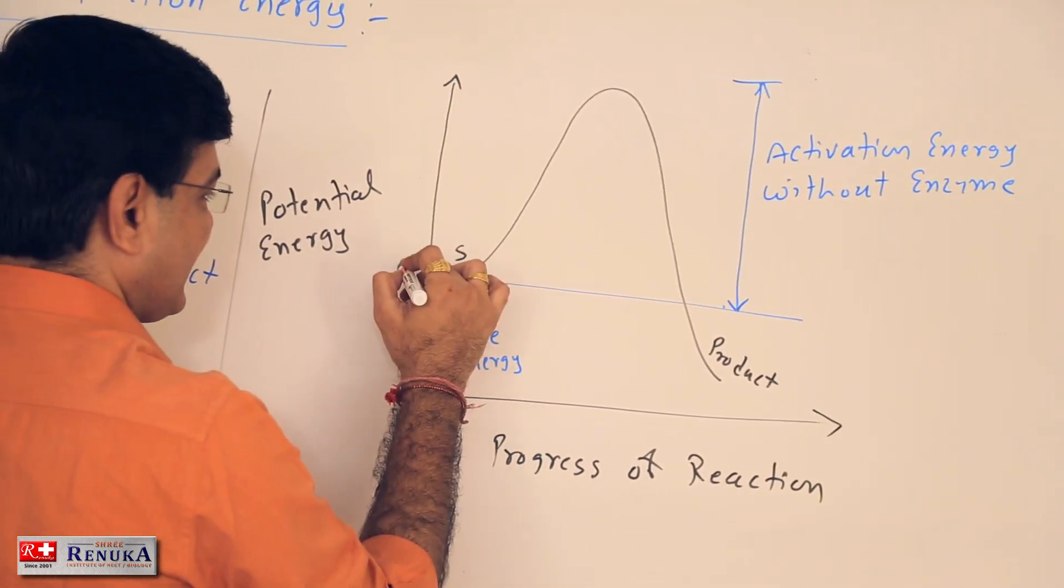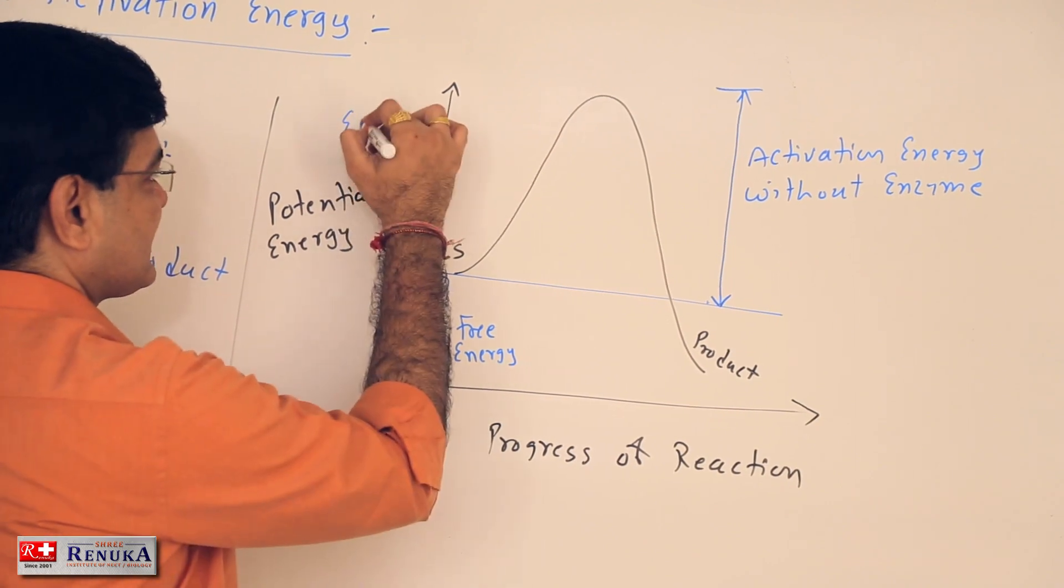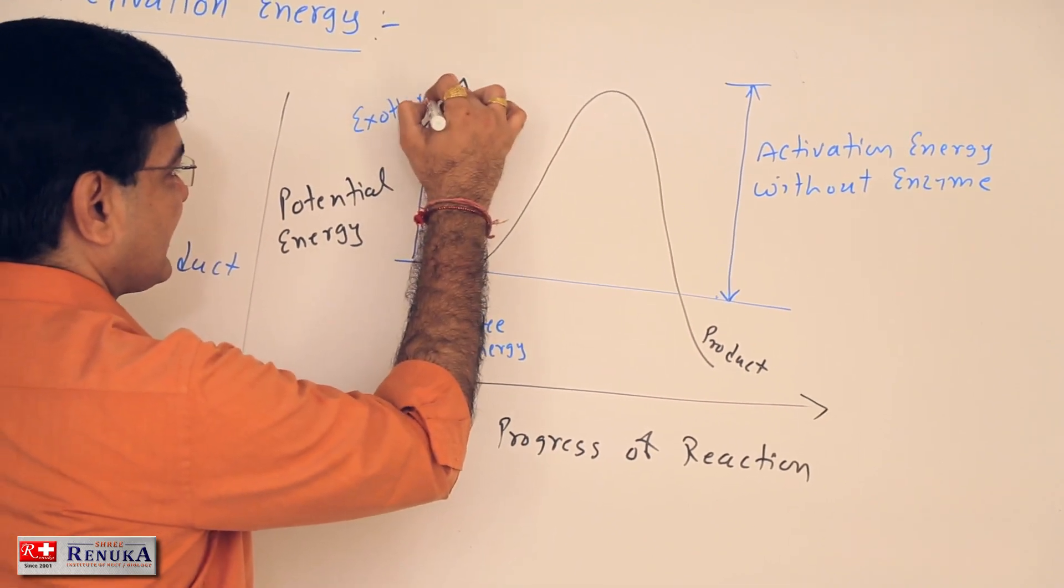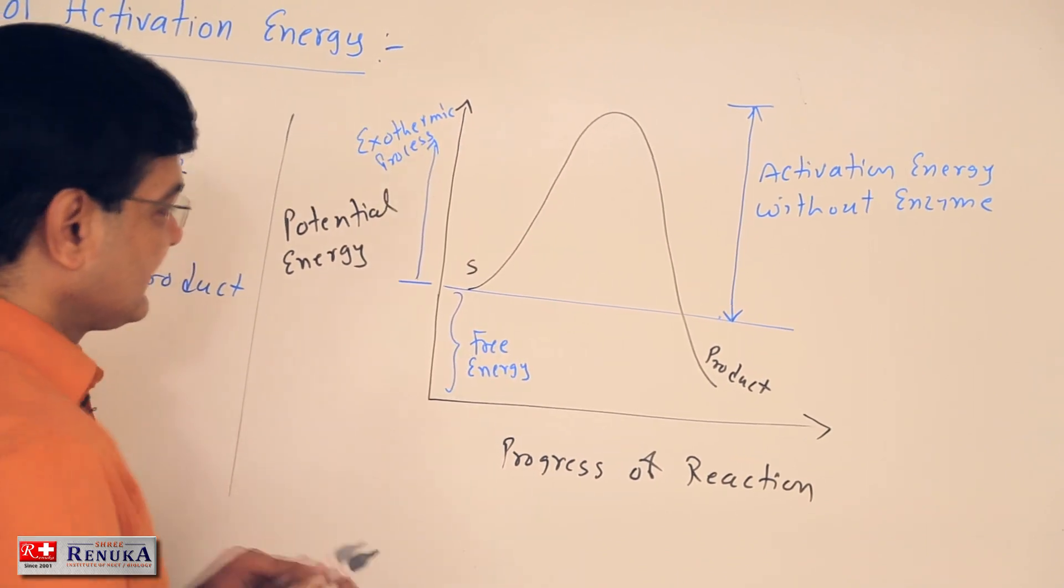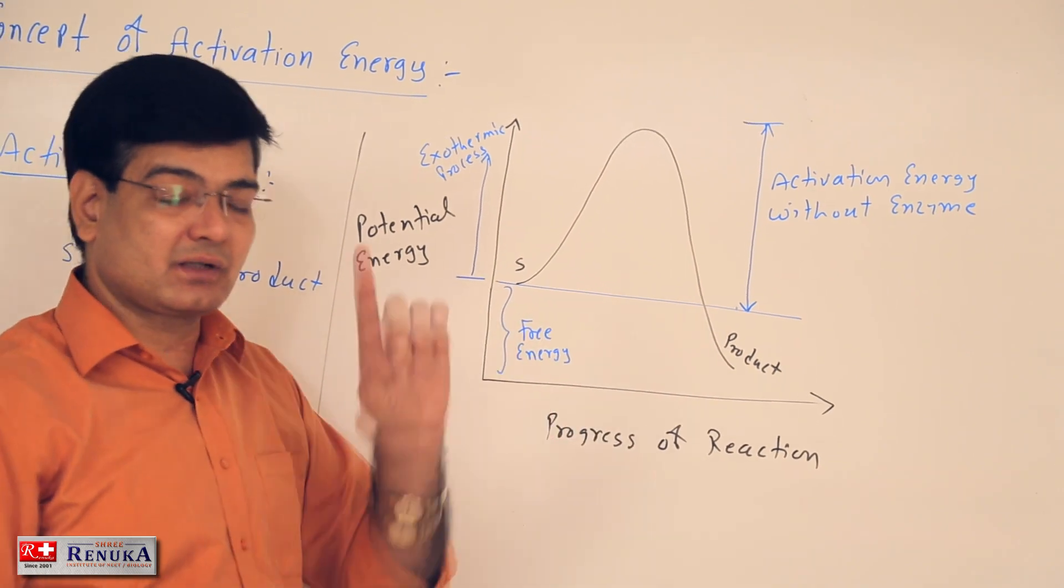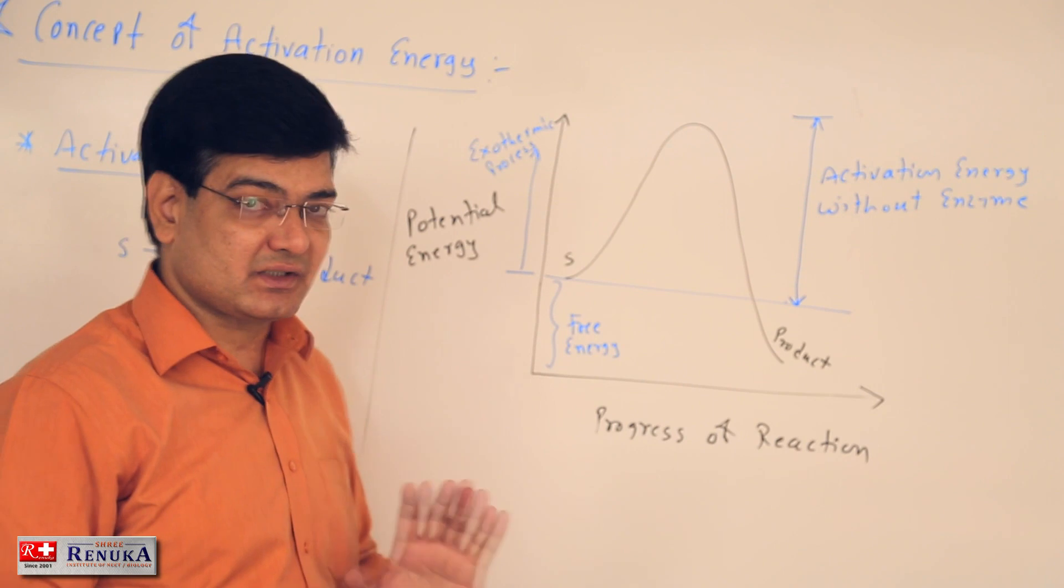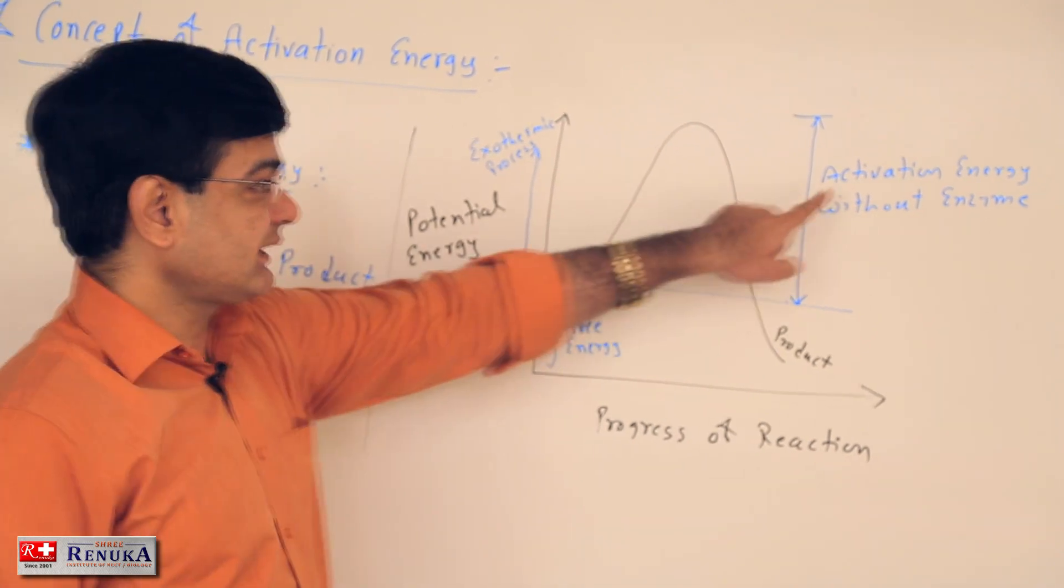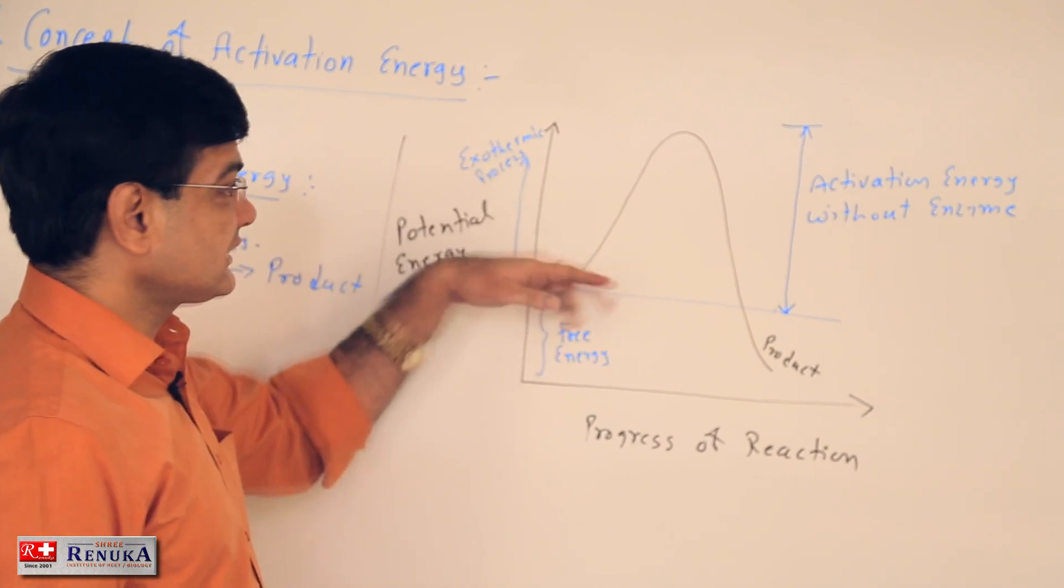Remember that this above the free energy, it is always exothermic process. If the free energy is sufficient, it is called endothermic process. But to convert substrate into the product, we need to give certain amount of energy and that is always activation energy and kind of reaction is exothermic reaction.